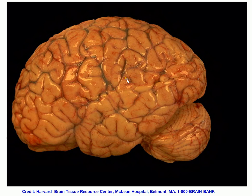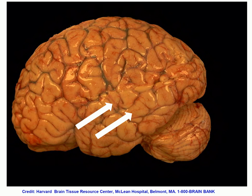The parietal lobe is an association lobe that integrates information. The most posterior aspect of the brain is occupied by the occipital lobe, which is responsible for handling vision and visual sensations. Next is the temporal lobe, which is responsible for hearing. The temporal lobe can be divided into three gyri, very similar to the frontal lobe: the superior temporal gyrus, the middle temporal gyrus, and the inferior temporal gyrus. The temporal lobe handles auditory sensations.